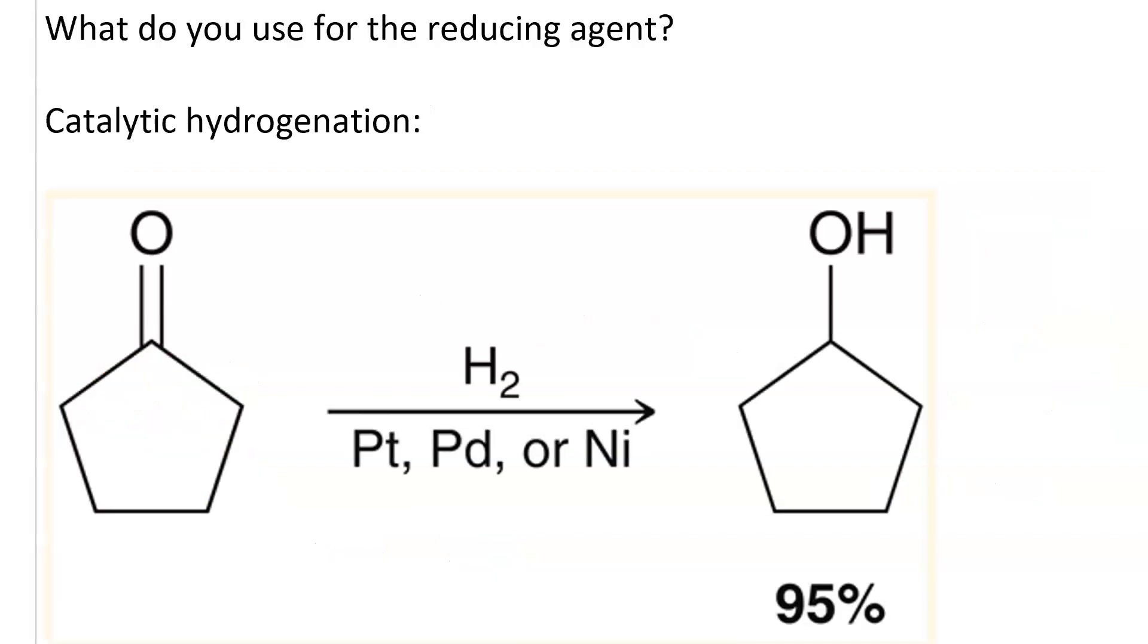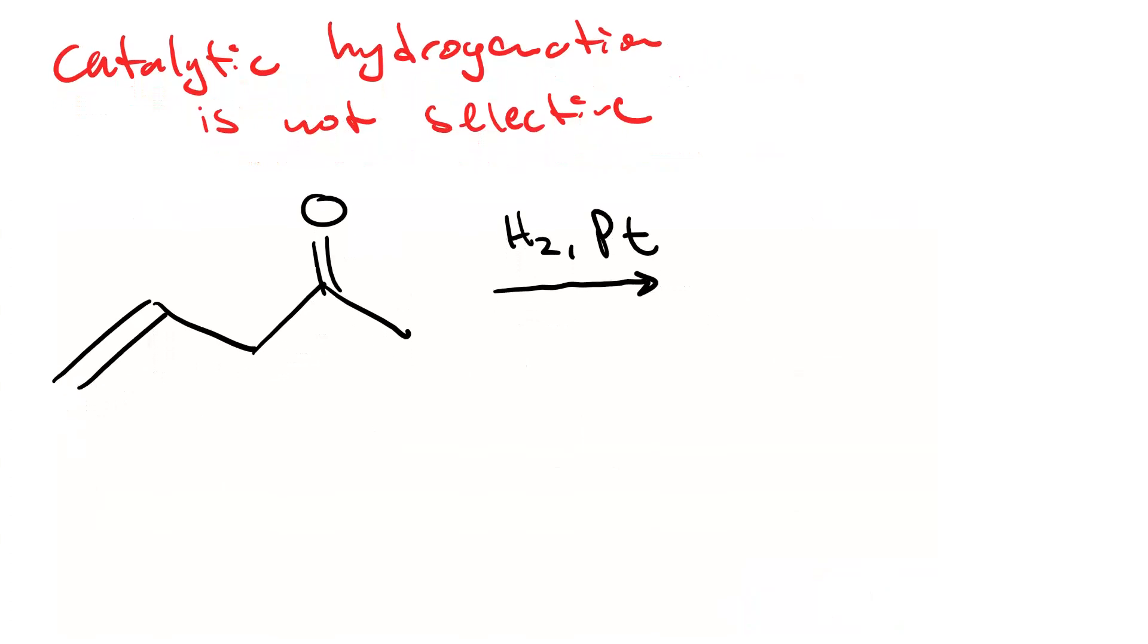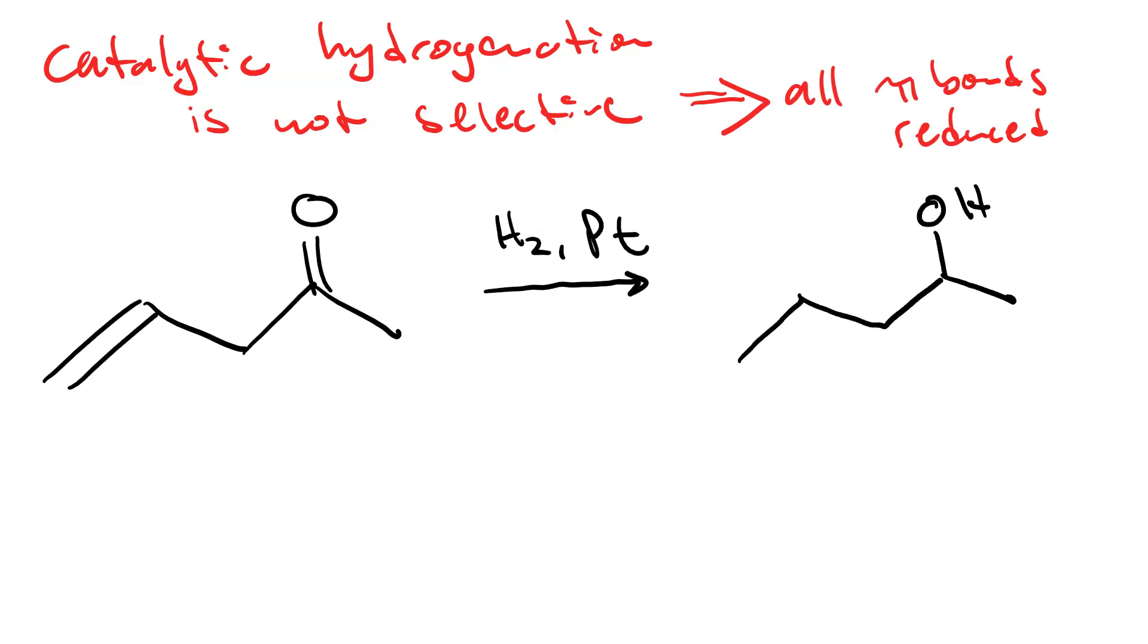What sorts of reducing agents might we use to go from a carbonyl to an alcohol? Something that gives you a very good yield is catalytic hydrogenation - H2 with Pd or Pt or nickel, and we go from the C double bond O to the C single bond OH. 95% yield. The problem with catalytic hydrogenation is that it's not selective - it'll reduce any pi bond in your molecule. For instance, if you take this molecule that's both an alkene and a ketone and subject it to catalytic hydrogenation, you end up with just a plain old 2-pentanol. All of the pi bonds were reduced.